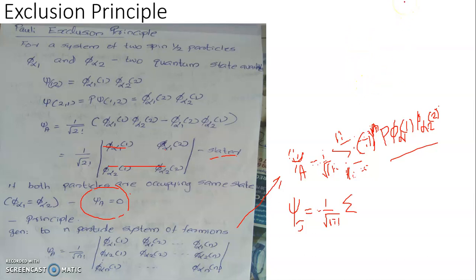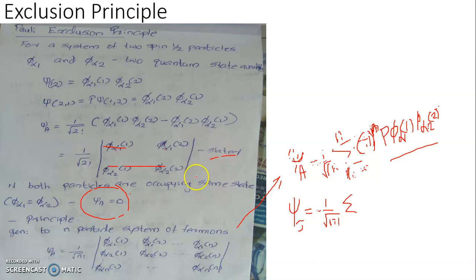In the case of atomic electrons, no two electrons will have the same set of quantum numbers — this is the Pauli exclusion principle. With that, the concept of Slater determinants comes in. Mathematically, we can prove that if two electrons share the same quantum state, the Slater determinant vanishes.